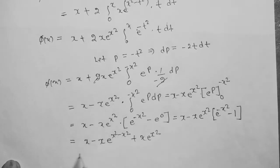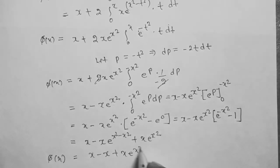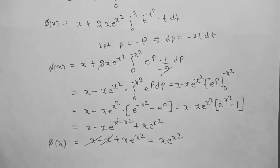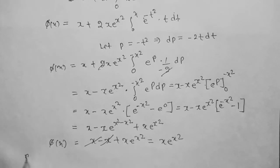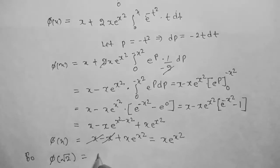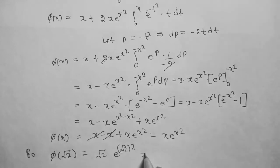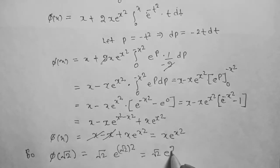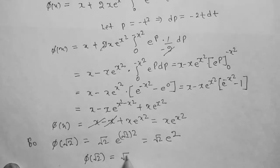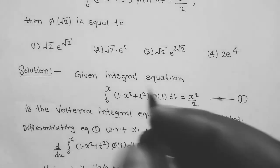This simplifies to: φ(x) = x minus x plus x·e^(x²), so φ(x) = x·e^(x²). Putting x = √2: φ(√2) = √2·e^((√2)²) = √2·e². So φ(√2) = √2·e², which means option 3 is the correct answer.